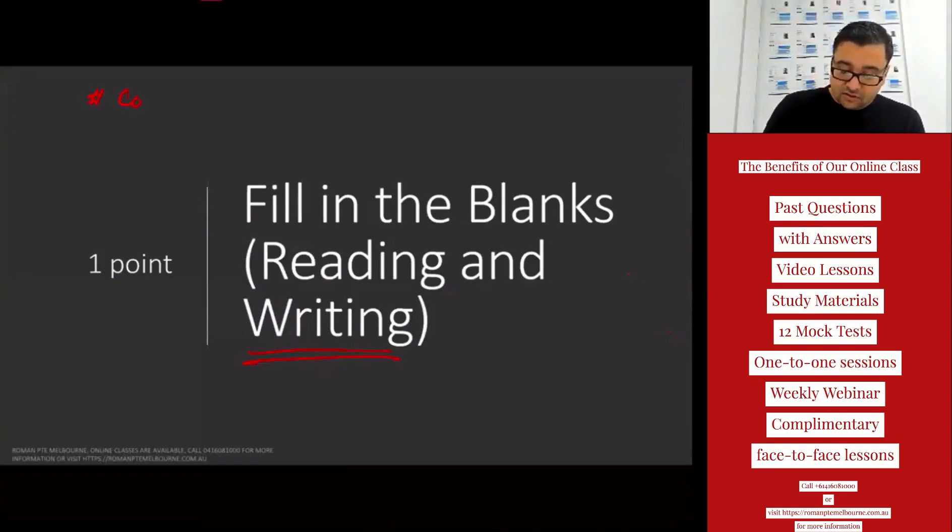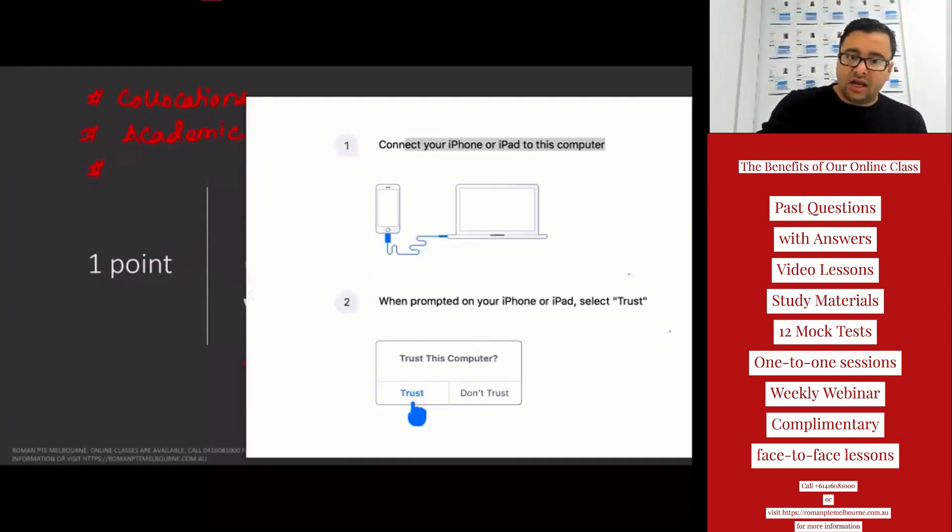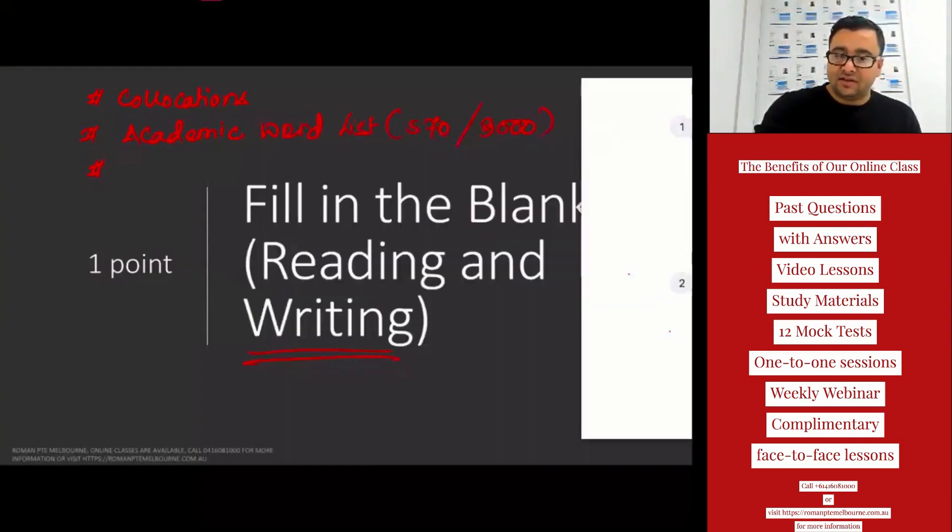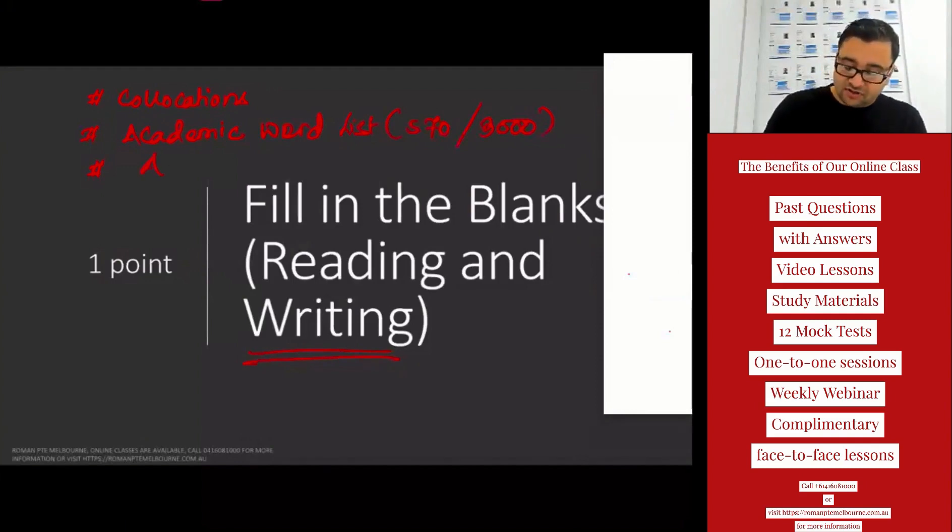The first again is collocations—here collocations are very important. And then you have to know about your academic word list. If you do not already know, we have got two academic word lists: abridged and unabridged. One is 570 words long and another one is 3,000 words long. Depending on your score target, you may have to go through one or the other. And the last thing that you have to do is you have to go through the academic phrases.